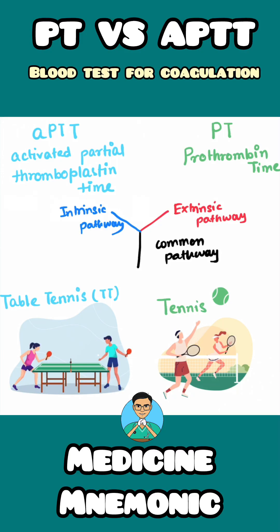Two common blood tests used to identify problems in coagulation disorders are: one, APTT, that is Activated Partial Thromboplastin Time, and two, PT, that is Prothrombin Time. We all know that the coagulation cascade has a common pathway which can be activated by either the extrinsic pathway or the intrinsic pathway.